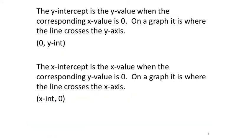Next we're going to look at lines on graphs — not just ordered pairs, but straight lines. You only need two points to graph a straight line. Two common points we use are the y-intercept and the x-intercept. For the y-intercept, the x value is always going to be zero.